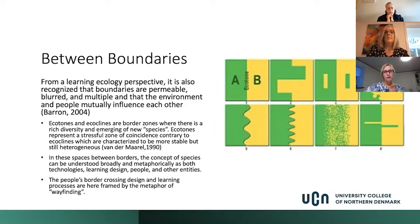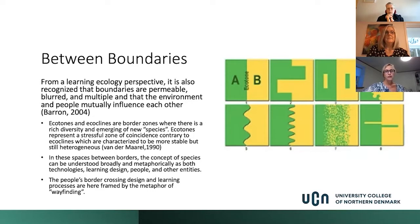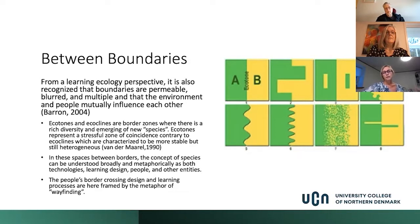When we look into learning ecology perspectives, we also have to recognize the boundaries. According to Barron, they are permeable, blurred and multiple, and they are influenced by people's mutual engagement. As you can see at the slide picture on the right side, there are different kinds of borders and ecotones. I have used concepts from biology — ecotones and ecolines — which both address the zones where there are risks, diversity and emerging new species. Ecotones represent the stressful zone, contrary to ecolines which are more stable, but they both capture how people navigate between theory and practice, between the digital and the physical environment, and between different kinds of engagement with technology.